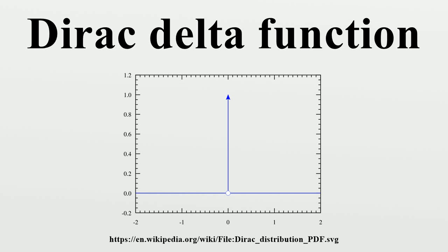on the real number line that is zero everywhere except at zero, with an integral of one over the entire real line. The delta function is sometimes thought of as an infinitely high, infinitely thin spike at the origin, with total area one under the spike, and physically represents the density of an idealized point mass or point charge.